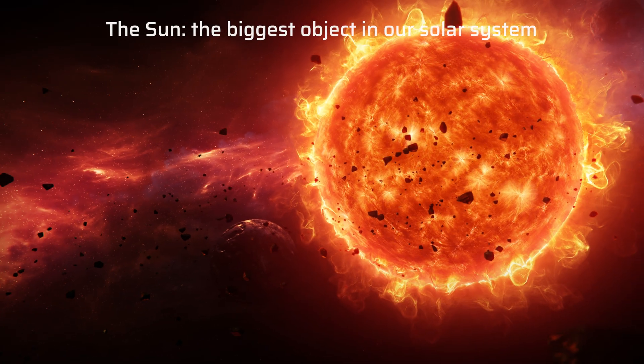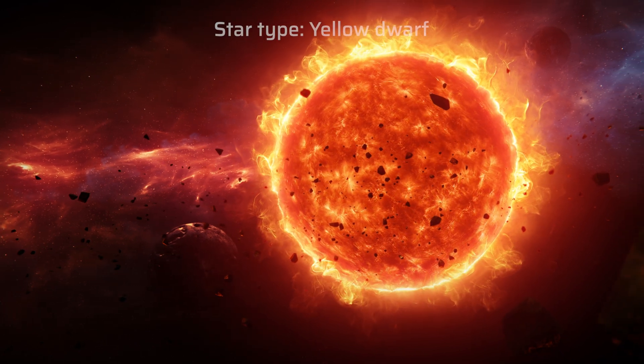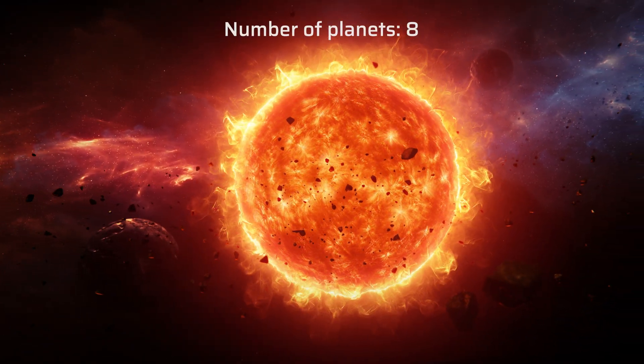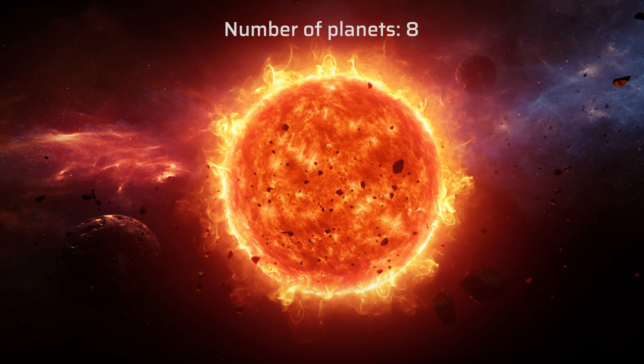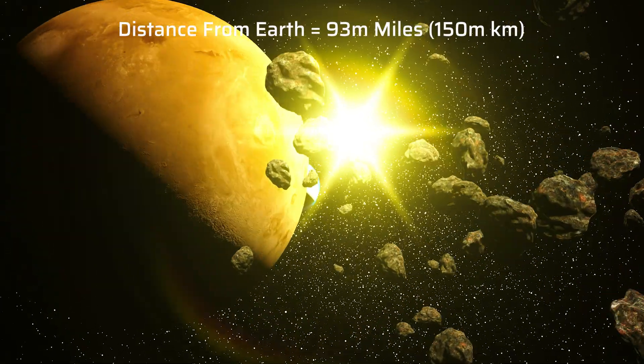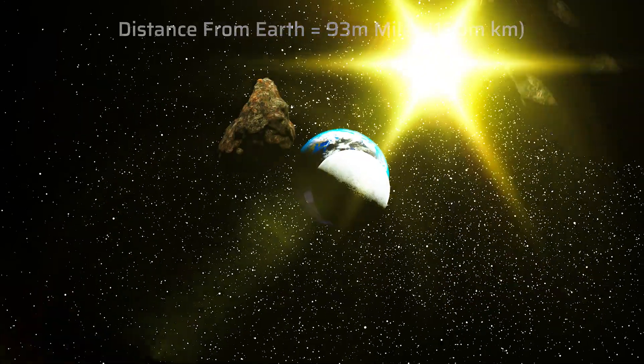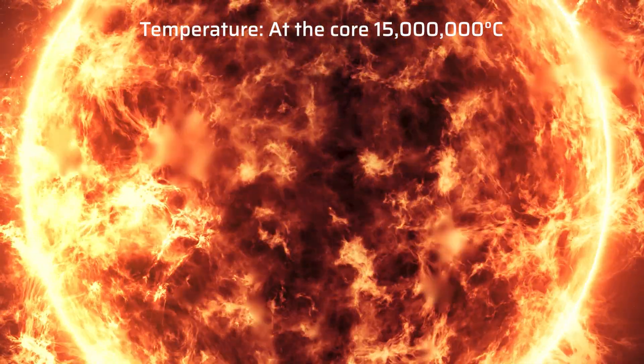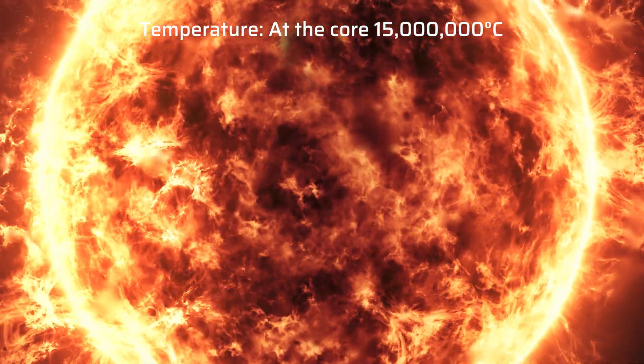The sun, the biggest object and only star in our solar system. It is a yellow dwarf. Its gravity holds the solar system together. Everything in our solar system revolves around it: the planets, asteroids, comets, and tiny bits of space debris. The temperature in the sun's core is about 15 million degrees Celsius.